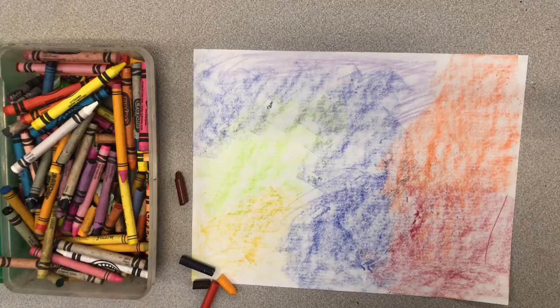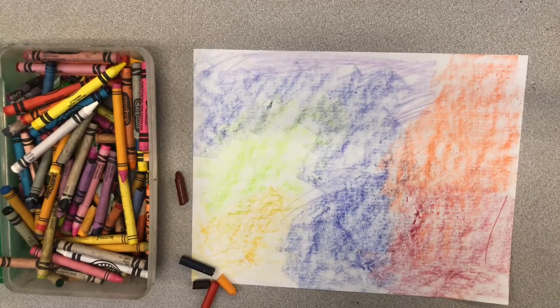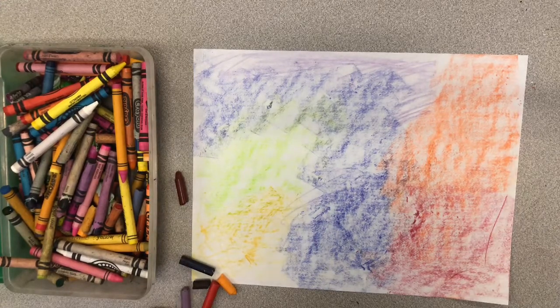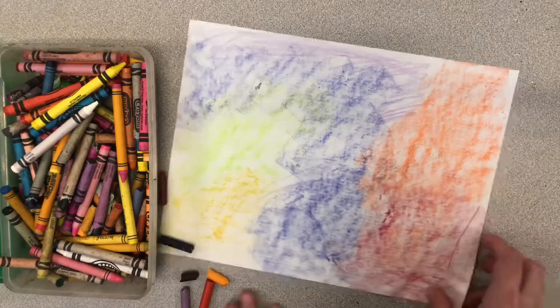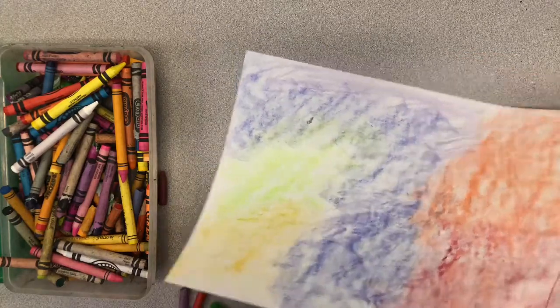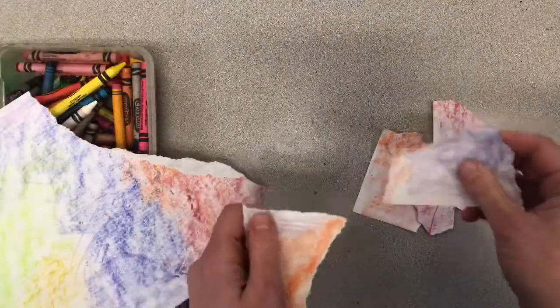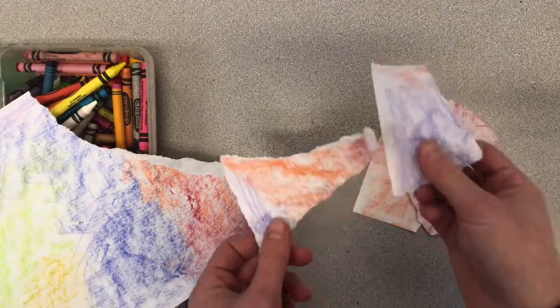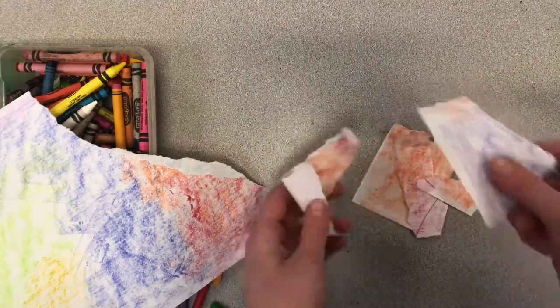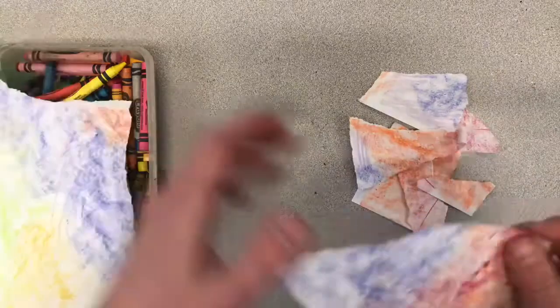All right, so now you can see I have my entire paper filled up with color. Once you do that you're just going to start ripping it up into some different sized pieces. Make sure that your paper, the color side is facing up, because if you put it on the white side you won't be able to see those colors.